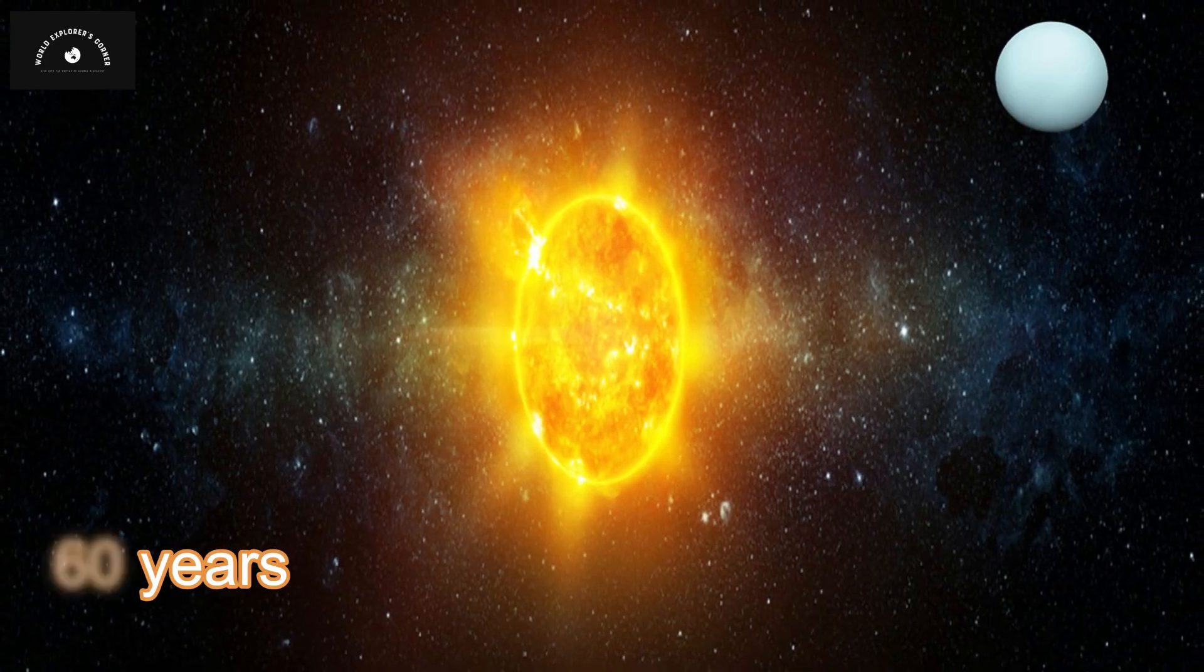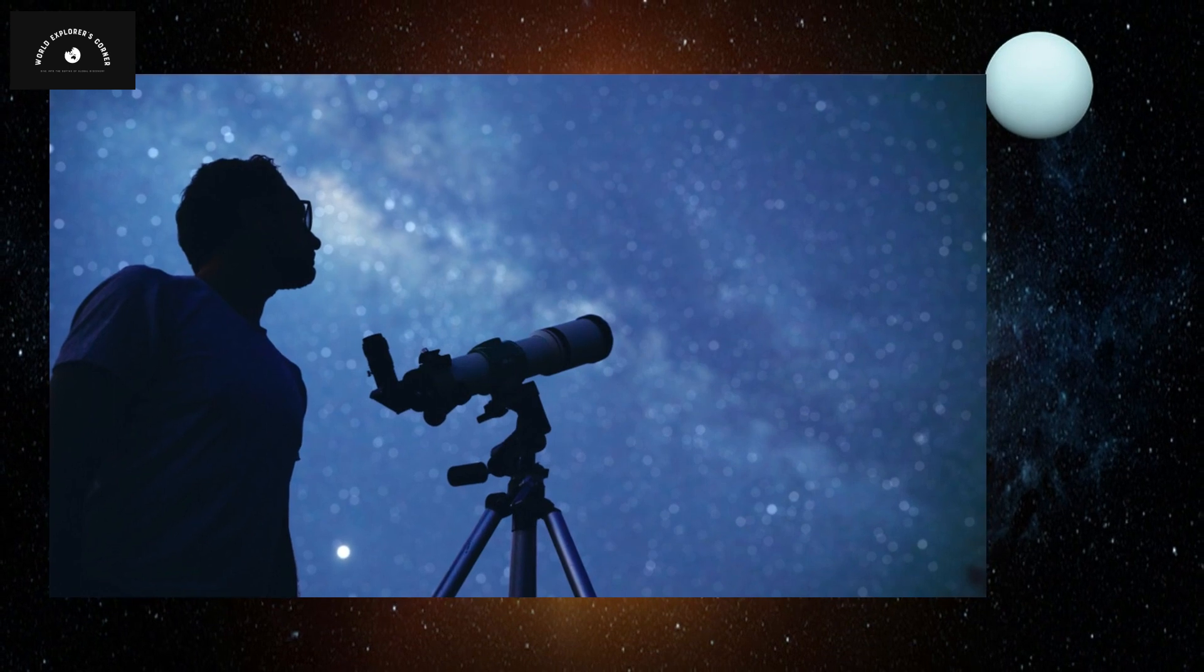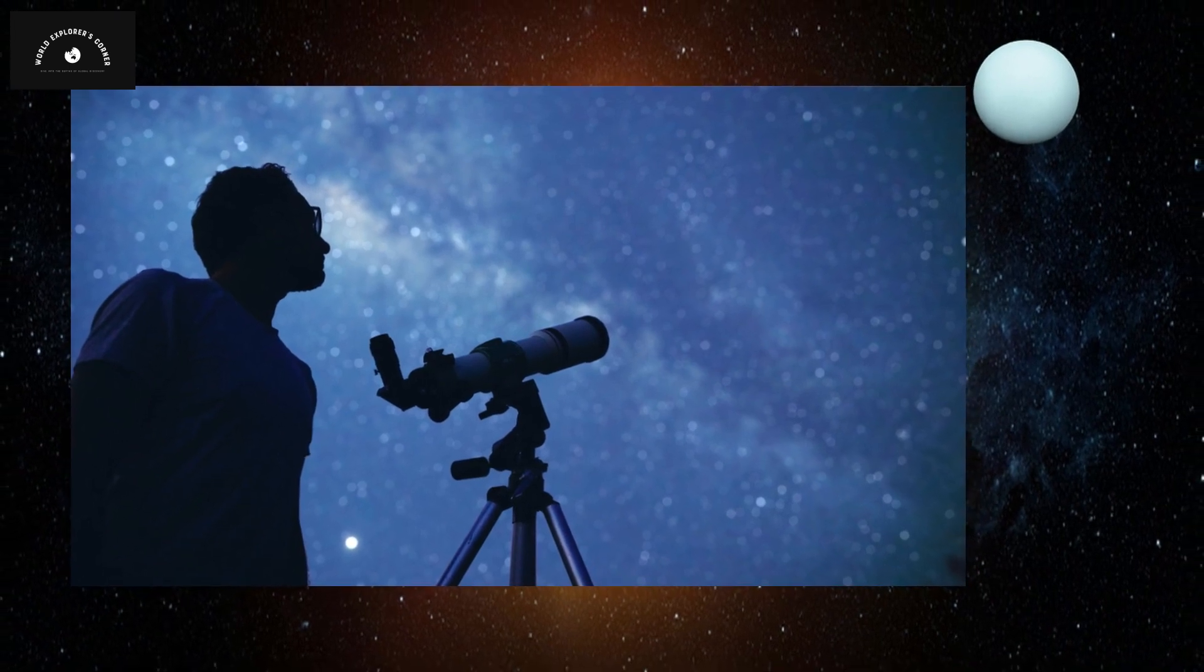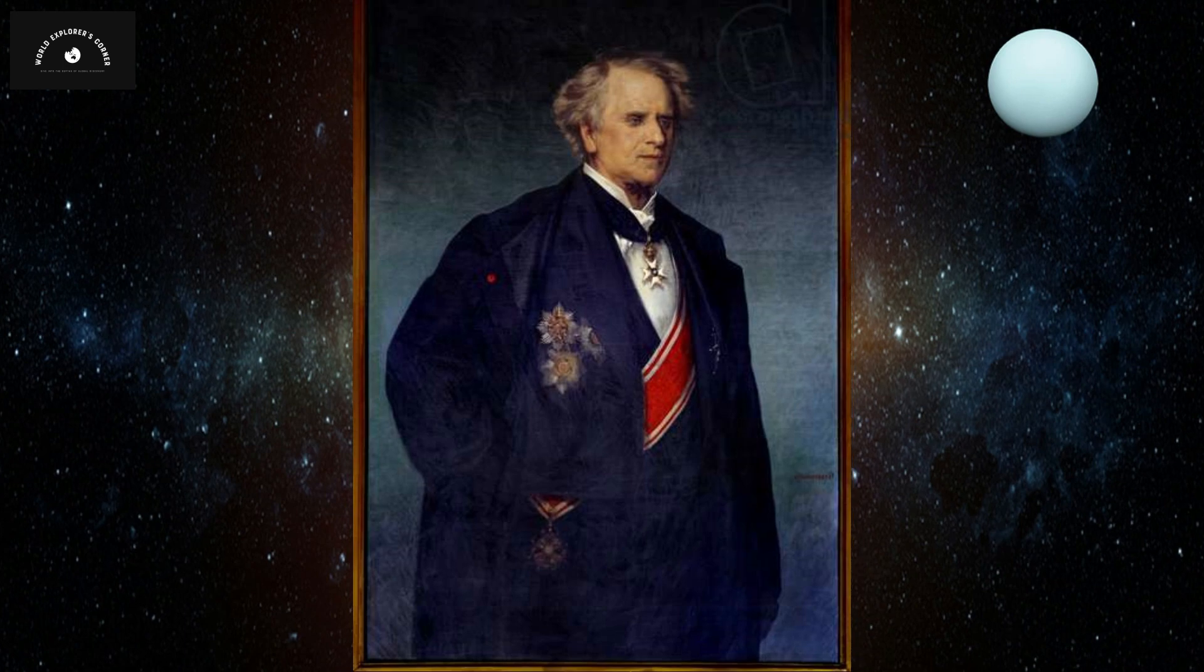For 60 years, astronomers worldwide grappled with Uranus's puzzling behavior. Among them was the French astronomer Urbain Le Verrier.